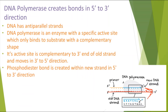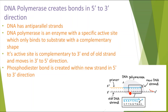The phosphodiester bonds are created within the new strand in the 5' to 3' direction. As DNA polymerase moves along the template in the 3' to 5' direction, the phosphodiester bonds are created in the opposite direction — 5' to 3' — in the new strand. This is because the DNA strands are anti-parallel.